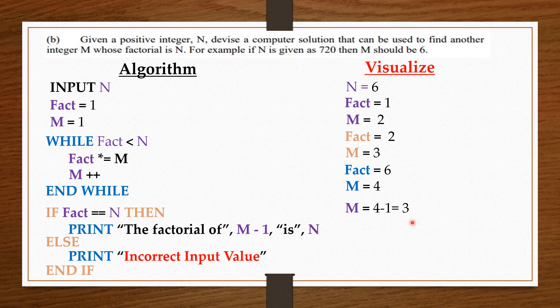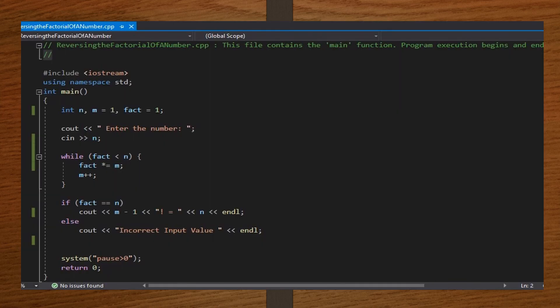Let's convert this algorithm to our code in C++ and see how it runs. So, in the int main function, I declared N, M, and then fact to be 1. Then I ask the user to enter the value of N. And I set the while loop which is going to count or check for the factorial. And then I set the if statement which will check if the fact is equal to N. If it is not, then it should print that the value is incorrect. Then I end my code.